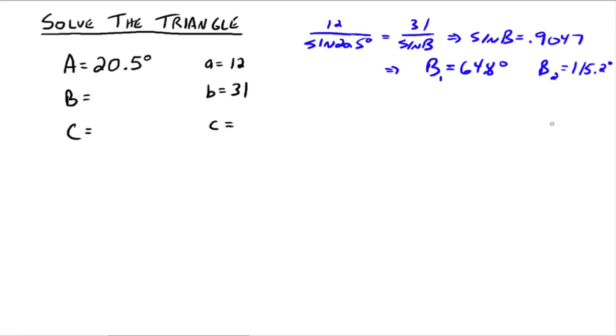Everybody see that? And we say, can we use them? Is 115.2 degrees too big? No, because 115.2 added to 20.5, we still have some room left over to get C. So this is a situation where we're going to have two triangles. So I'm going to call this triangle 1, and down here, we're going to have triangle 2.